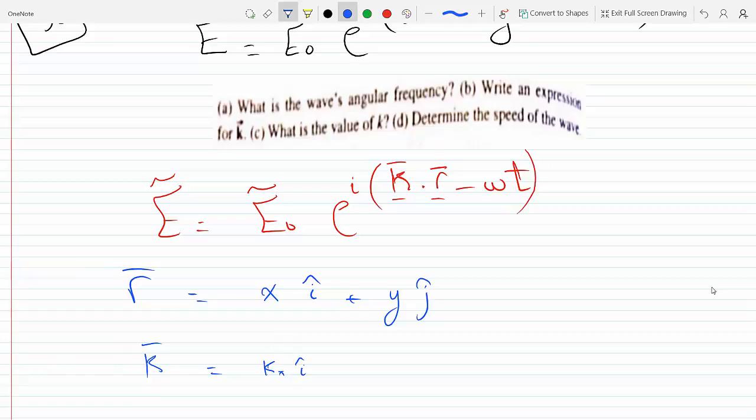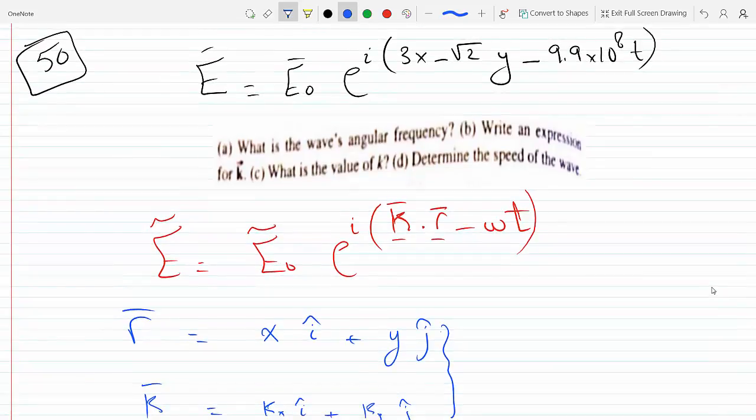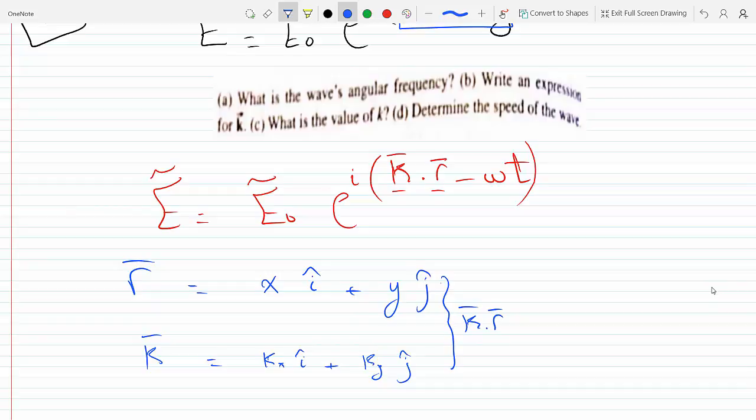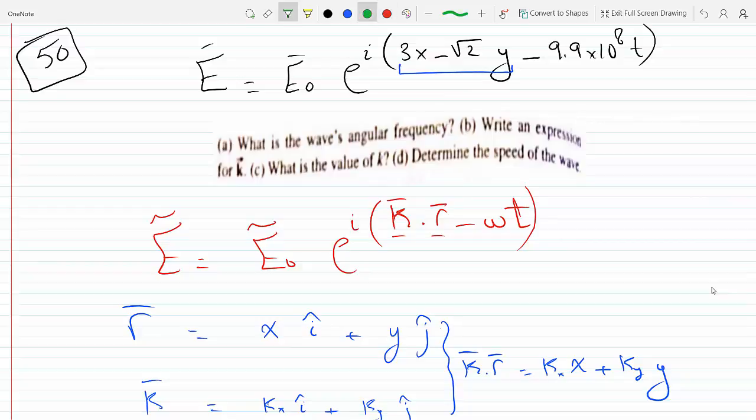When you dot this with K, K has some numbers - let's say Kx in the i plus Ky in the j. So when you dot these two, you're supposed to get what's up here. K dot R will just be Kx times X plus Ky times Y. If you compare this to what you have up there...